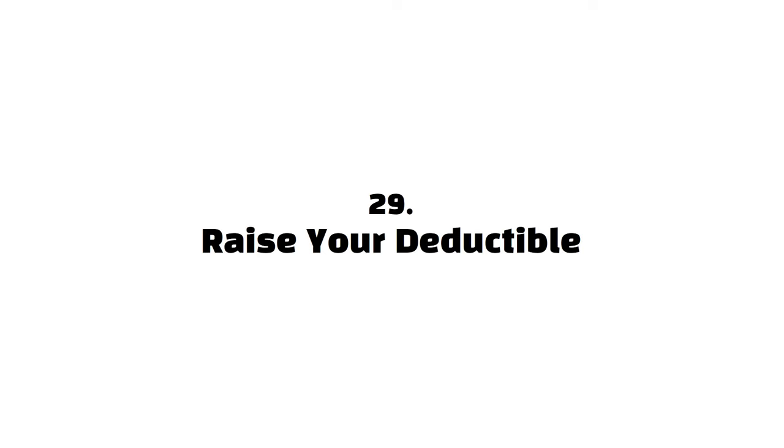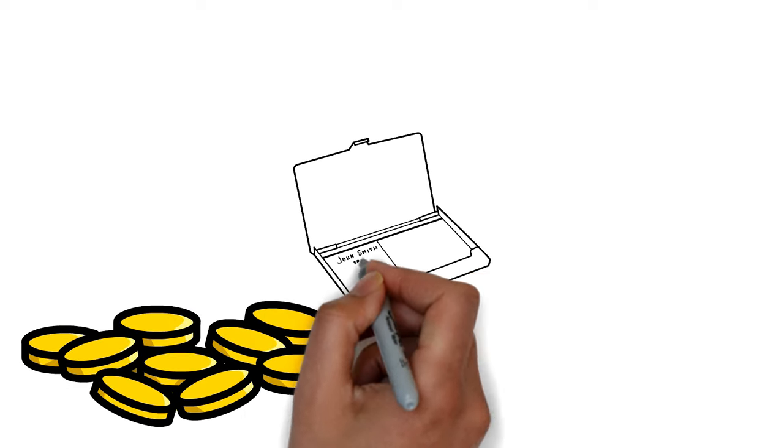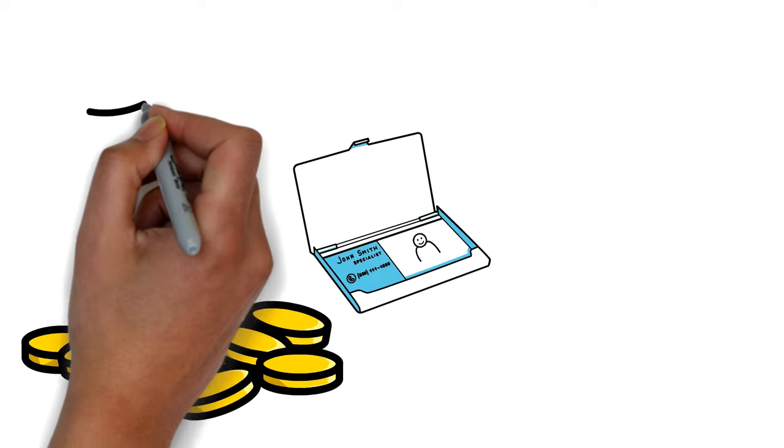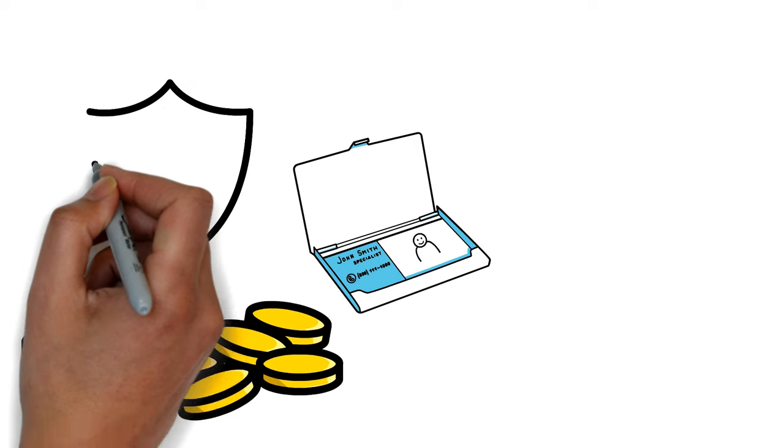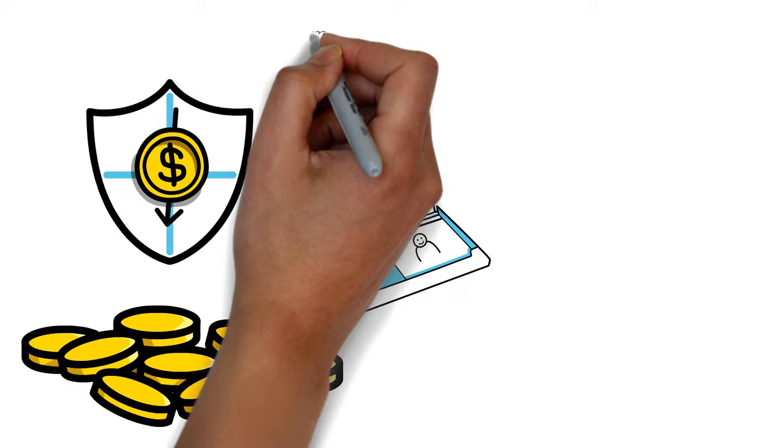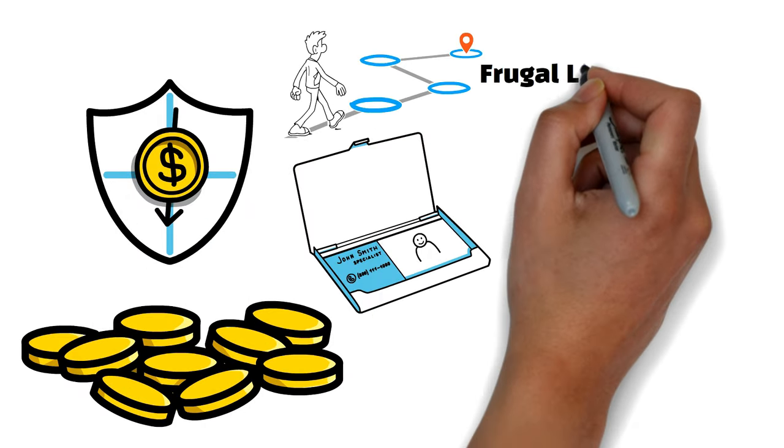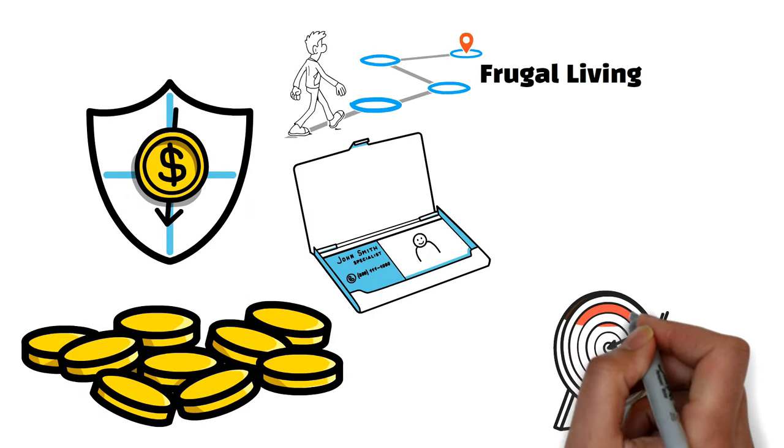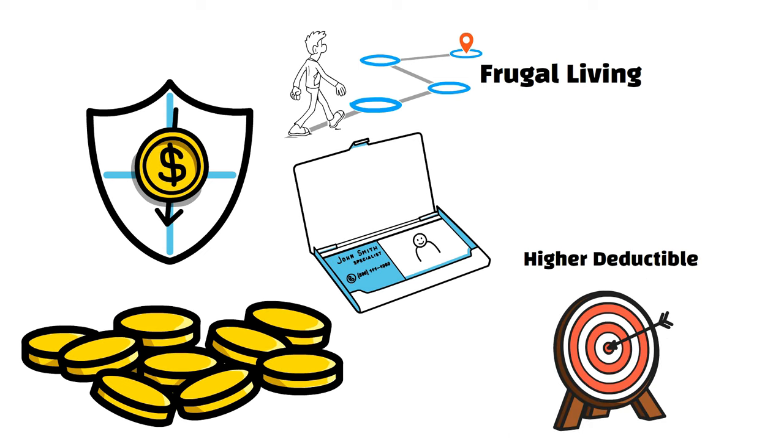Twenty-nine, raise your deductible. A deductible is the amount of money you must spend before your insurance policy can start covering expenses. In other words, a low deductible means you only get a small payment for your insurance coverage. As much as you should try to live frugally, if you're under any form of insurance coverage, you should try to raise your deductible. You never know when you'll need that insurance paycheck.